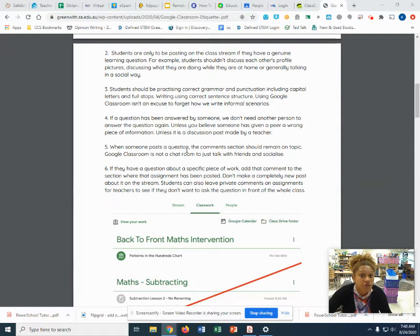We should be using capital letters for our name. We should be using capital letters when we're saying 'I.' If a question has been answered by someone, we don't need another person to answer the question again. So we shouldn't have five responses to one question.